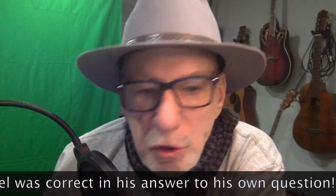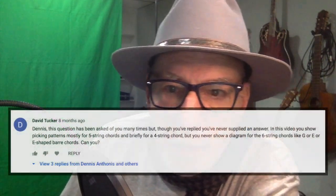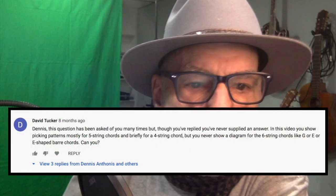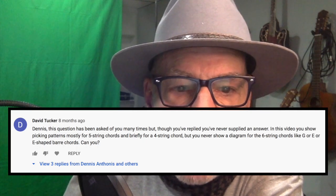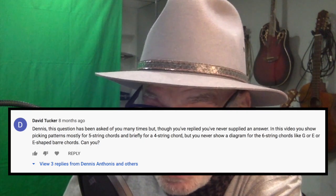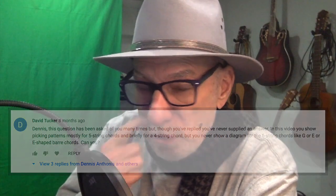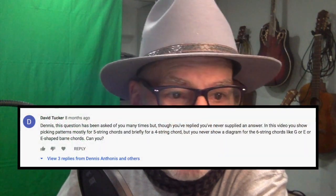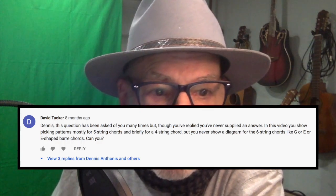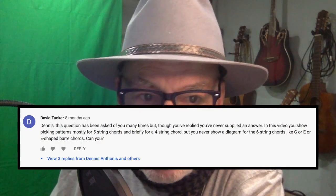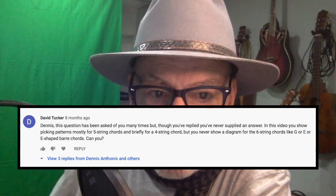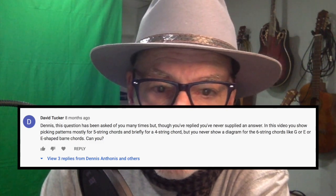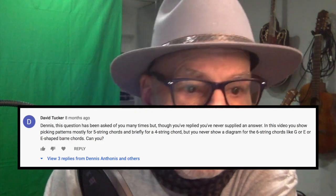And then I get this question from David Tucker. Dennis, this question has been asked of you many times, but though you've replied, you've never supplied an answer. In this video, and I wish I knew which one, I just grabbed a screenshot of this question. In this video, you show picking patterns mostly for five-string chords and briefly for a four-string chord, but you never show a diagram for the six-string chords like G or E or E-shaped bar chords. Can you?